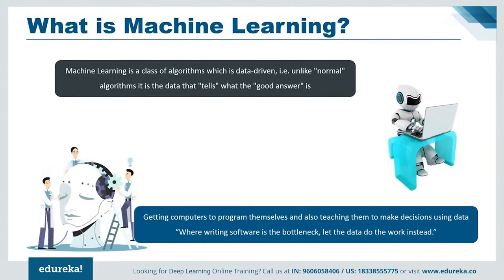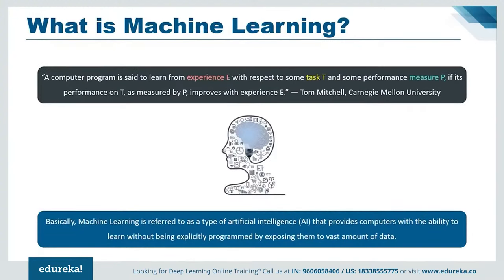Now let's talk briefly about machine learning and understand what it means when we say we are programming machines to learn. Here is a famous quote by Tom Mitchell of Carnegie Mellon University: 'A computer program is said to learn from experience E with respect to some task T and some performance measure P, if its performance on T as measured by P improves with experience E.' For example, if you want your program to predict traffic patterns at a busy intersection — that is task T — you run it through a machine learning algorithm with data about past traffic patterns, which is experience E. The accuracy of the prediction, which is the performance measure P, depends on whether the program has successfully learned from the dataset.